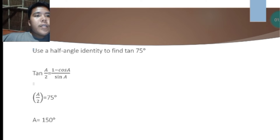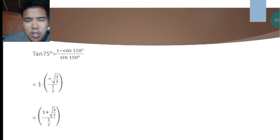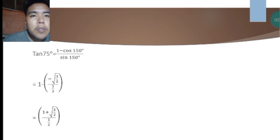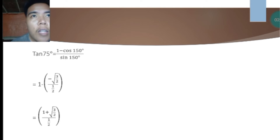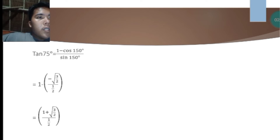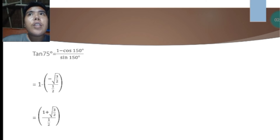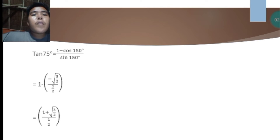So tan 75 degrees equals 1 minus cos 150 degrees over sine 150 degrees. Where did we get 150? Because a/2 equals 75, and we multiplied 75 by 2. Now we find the value of cos 150 degrees — you can look it up in a table or solve it directly. The value of cos 150 degrees is negative square root of 3 over 2.